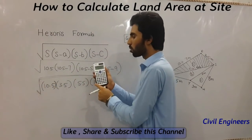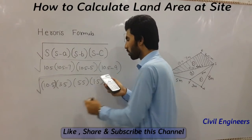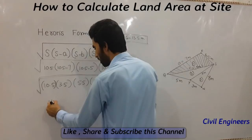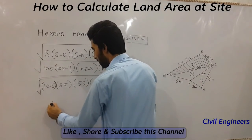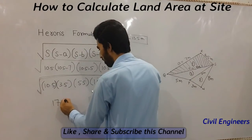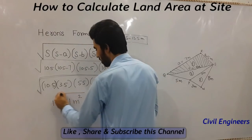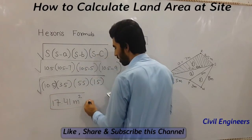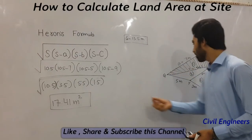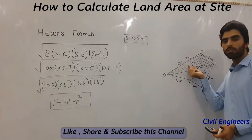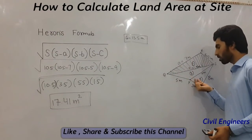Click the square root button on the calculator and complete the calculation. The result is 17.71 square meters. So this is the area of triangle number one. Use the same formula for the second triangle and also for the third triangle.